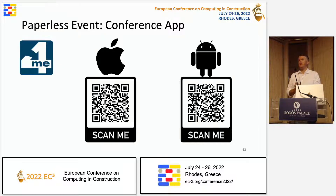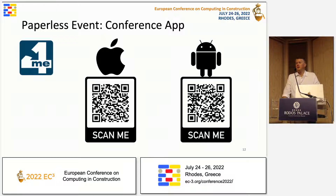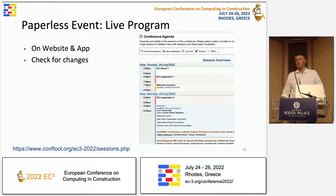EC3 is a paperless event, so we do not have a printed program. Please download the conference app — it's called Conf4Me, available on Android or the Apple store. The app has the full program with all the different sessions; you can customize it and create your own agenda. If you don't want to use the app, the live program is also on the EC3 website. We don't anticipate any changes in the schedule, but just in case we will update it there and send out an email to all participants.